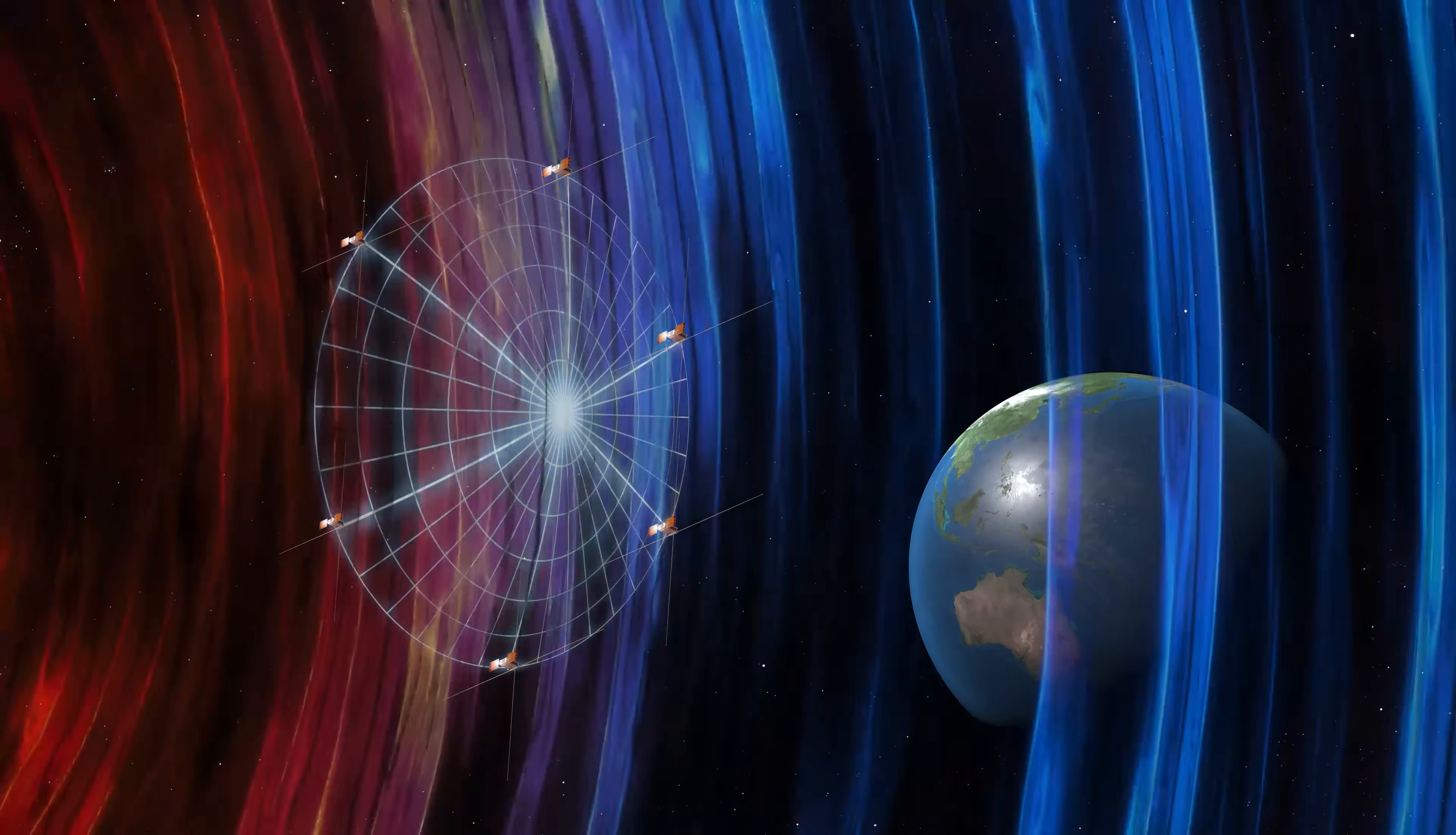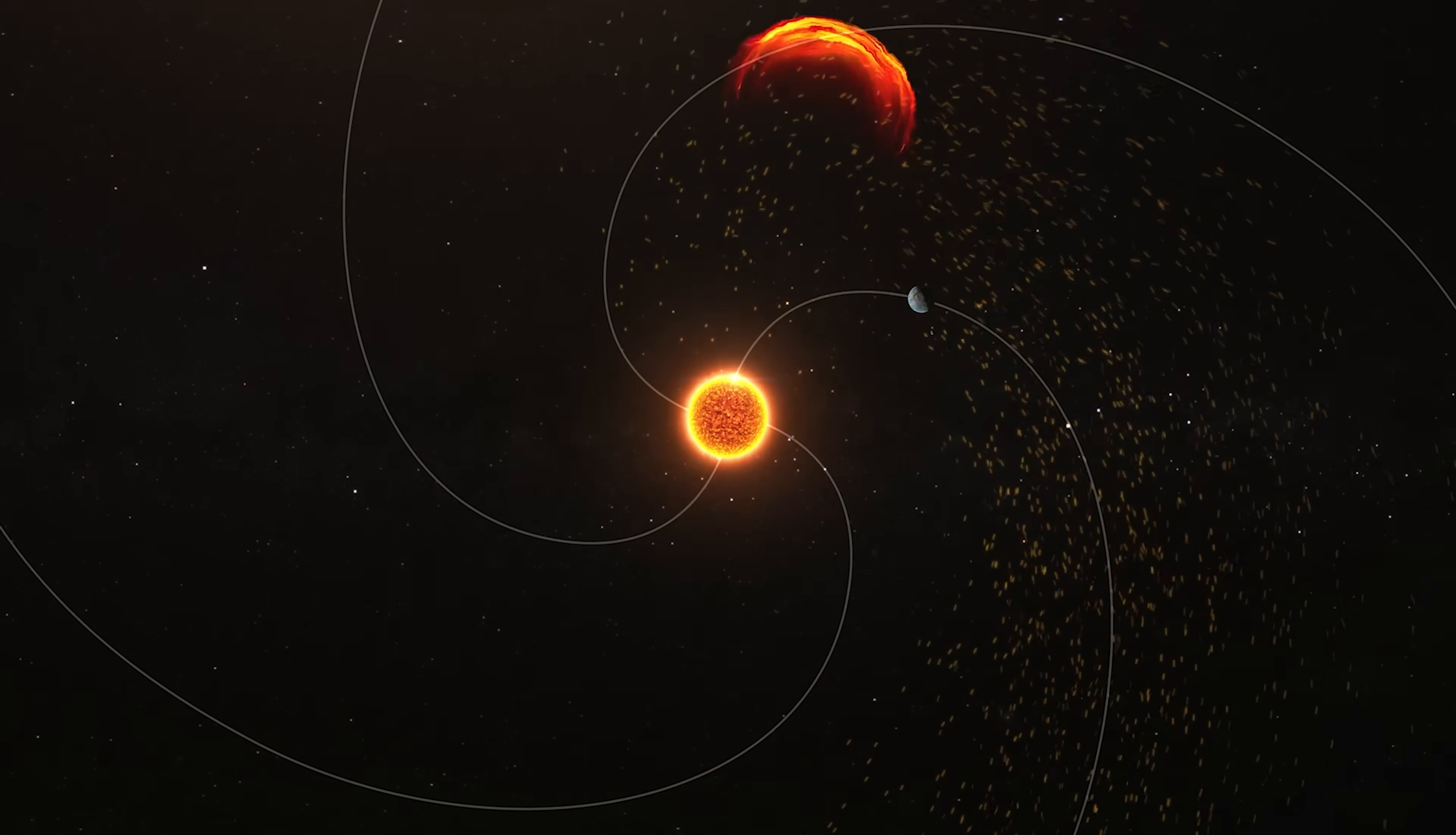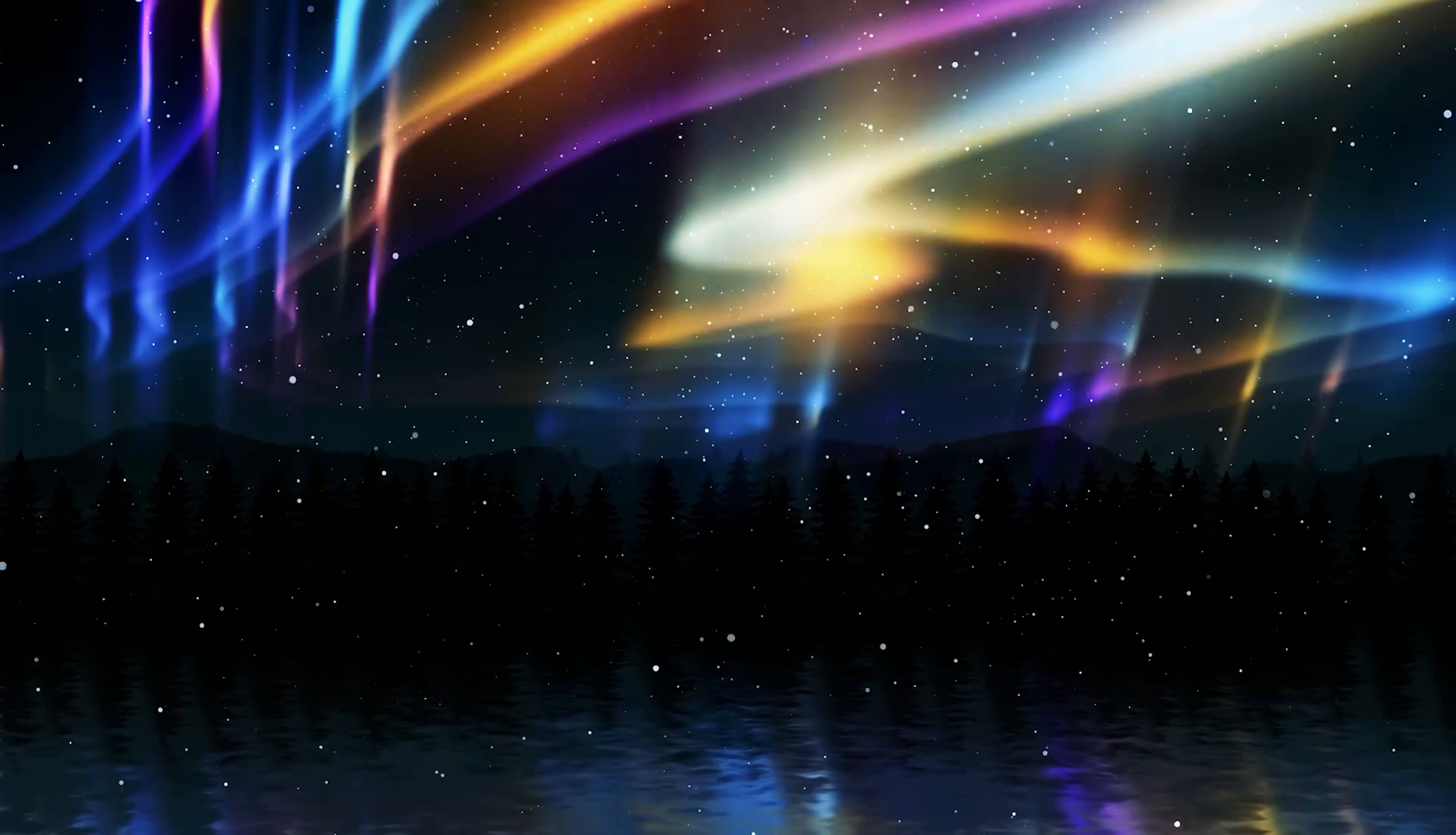Auroras were reported in places like Colombia, Panama, southern Japan, and New Zealand, and were so bright in locations closer to the poles that people started getting out of bed, mistaking it for daytime.